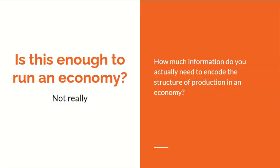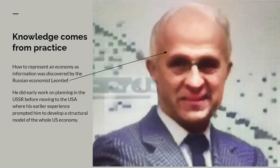But is this enough to run an economy? It's not really enough. We have to ask how much extra information you actually need to encode the structure of an economy — the structure of the production flows and interactions within it. How to encode this information wasn't really addressed practically until socialist planning became a real issue in the 1920s. The person who did the pioneering work on it was a Russian economist, Leontiev — he was a Menshevik.